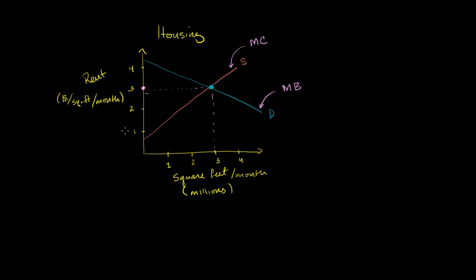$3 per square foot per month is pretty pricey rent. A thousand square foot apartment — like a two-bedroom, two-bath — would be roughly $3,000 a month. This is the type of rent you'd see in San Francisco. Let's say the mayor doesn't like this; it's unaffordable and people aren't able to live in the city. So they institute rent control, which is essentially a price ceiling.